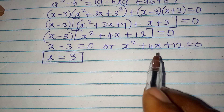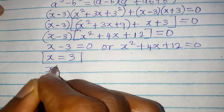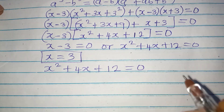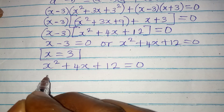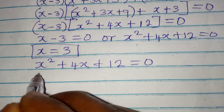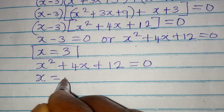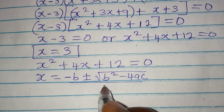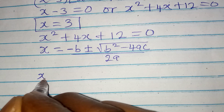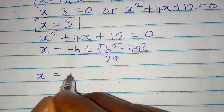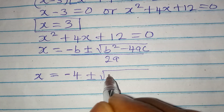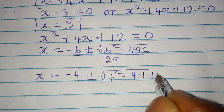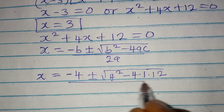To get the other values of x, we take the quadratic equation x squared plus 4x plus 12 equals 0 and apply the quadratic formula: x equals negative b plus or minus square root of b squared minus 4ac, all over 2a. Substituting, we get x equals negative 4 plus or minus square root of 4 squared minus 4 times 1 times 12, over 2 times 1.